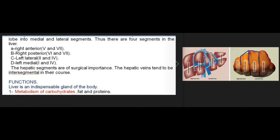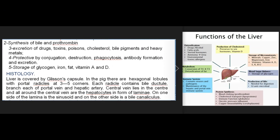Functions: the liver is an indispensable gland. Its functions include: 1) metabolism of carbohydrates, fat, and proteins; 2) synthesis of bile and prothrombin; 3) excretion of drugs, toxins, poisons, cholesterol, bile pigments, and heavy metals; 4) protective functions — conjugation, destruction, phagocytosis, antibody formation, and excretion; 5) storage of glycogen, iron, fat, vitamin A, and vitamin D.